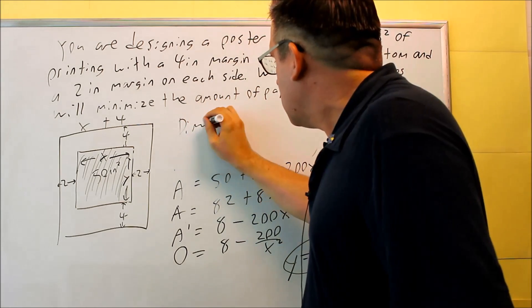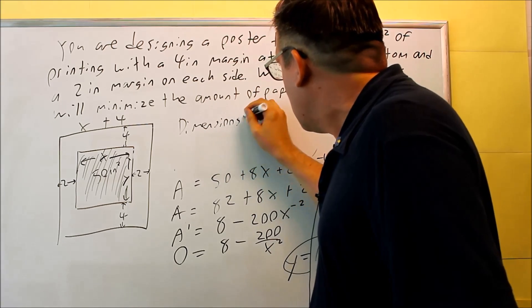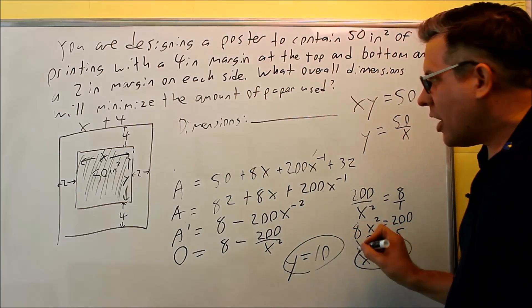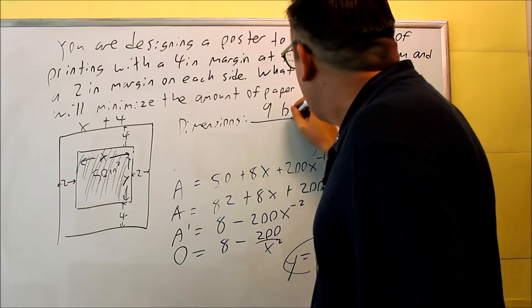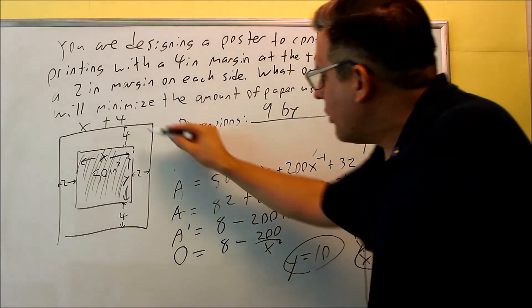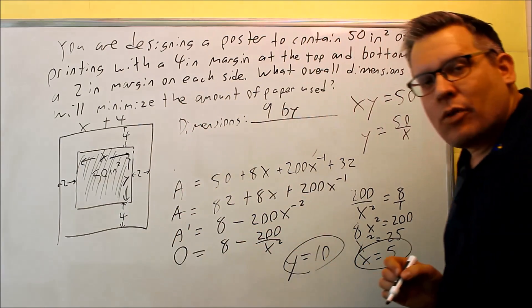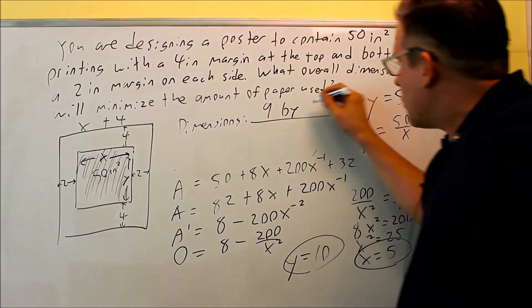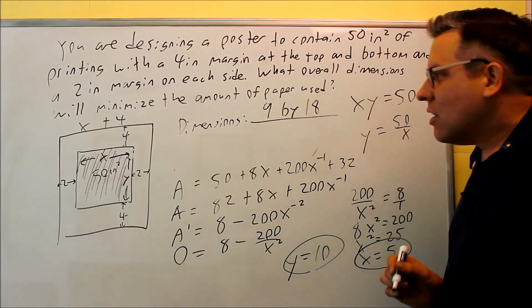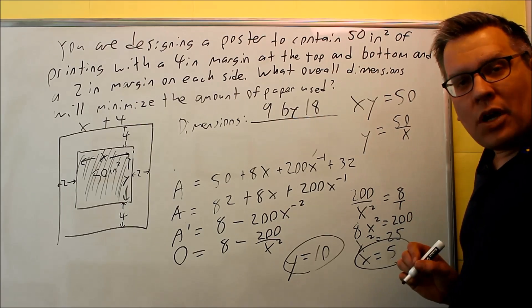So the dimensions, if it asks for it here, if you put 5 back into here, 5 plus 4 is 9. If you put 10 into this dimension, that was a y plus 8 that we had before. Then we get 10 plus 8. So you get a 9 by 18 is going to be the overall dimensions of it.